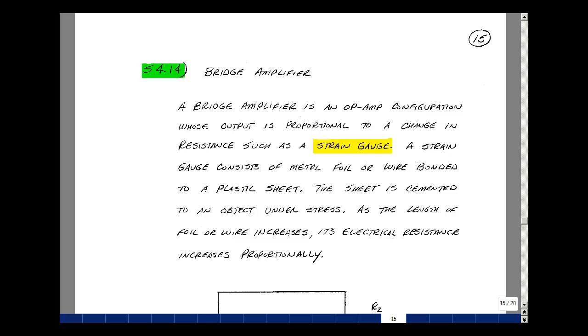The circuit shown at the bottom of this page is called a bridge amplifier. It's an op-amp configuration whose output is proportional to a change in resistance. We'd use this kind of circuit with what's called a strain gauge.